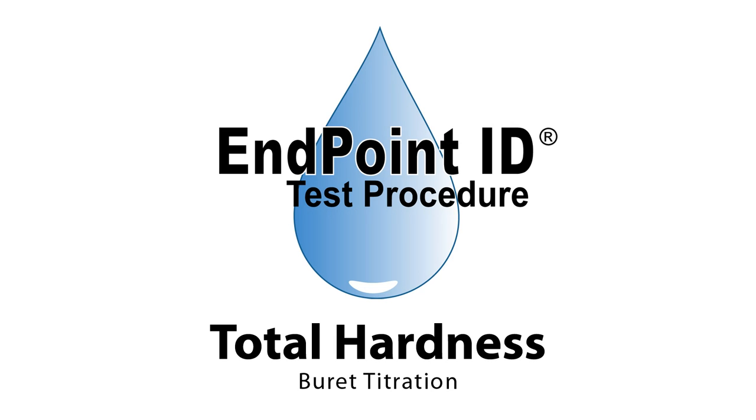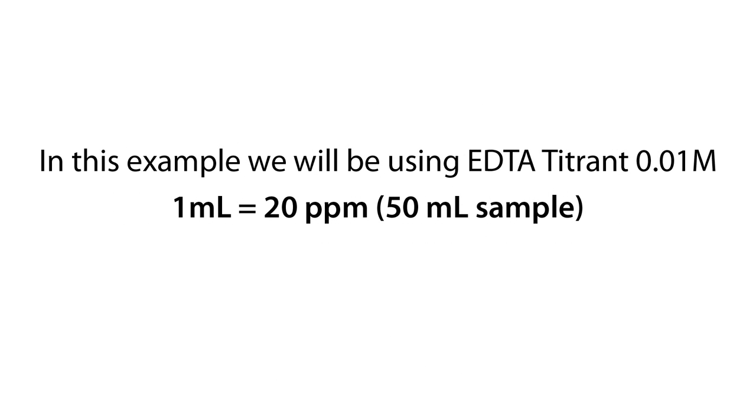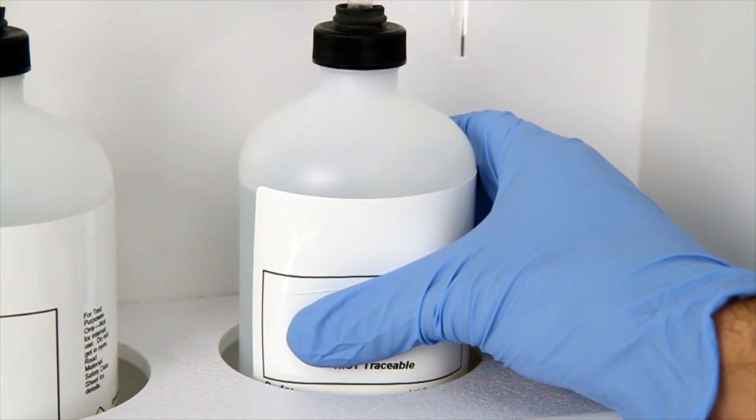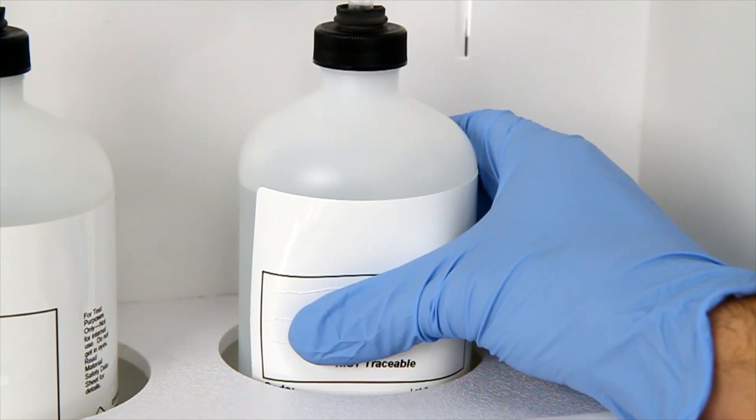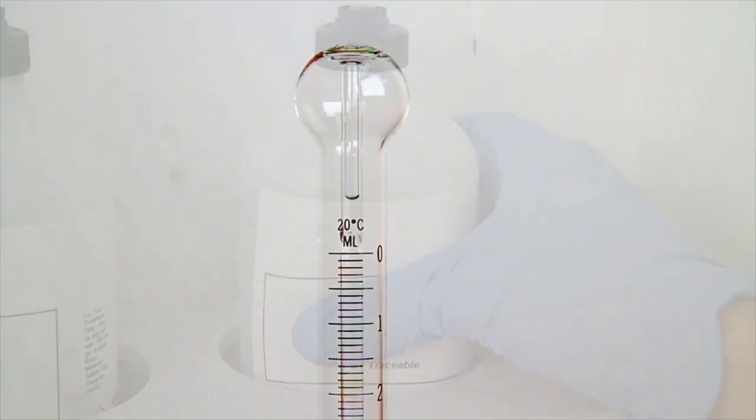This is a demonstration of a total hardness burette titration. The first step is to fill and zero the burette with EDTA titrant. Zero the burette by squeezing the bottle until the titrant reaches the zero mark.